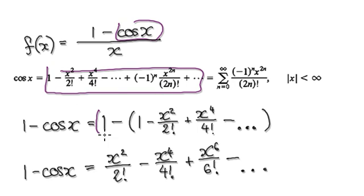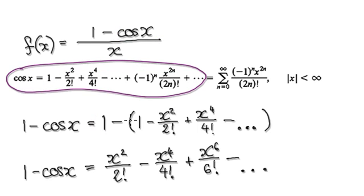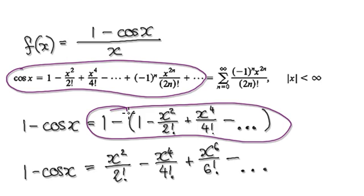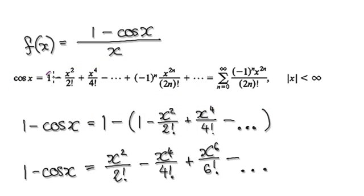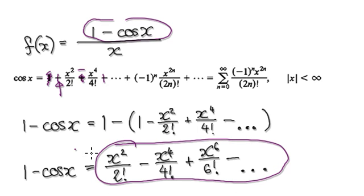So cos of x is this whole series here. But when you have one take away our series, what's actually happening is that looking at cos of x, when you have one take away cos of x, the one would disappear, and then this term will become a positive — so all these signs switch over. This will become a negative, this will become positive, and so on. So the numerator here will then become this nice and neat series here.